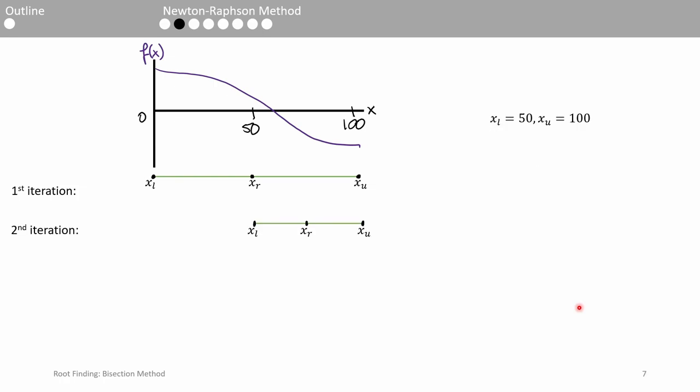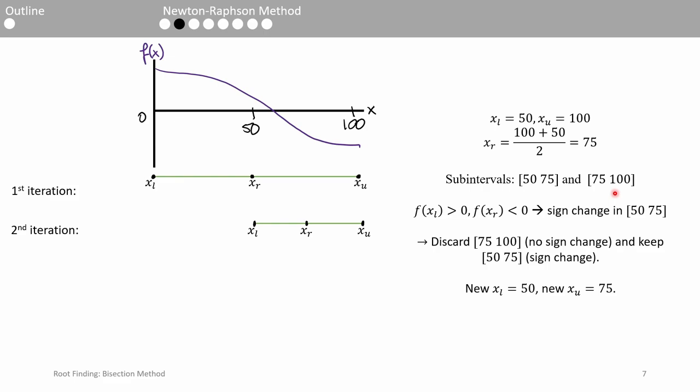For the second iteration, we split the interval 50 to 100 in half and assume that the root lies at the midpoint. We now end up with two subintervals, 50 to 75 and 75 to 100. The interval 50 to 75 contains the sign change, so we will work with this interval in the third iteration.